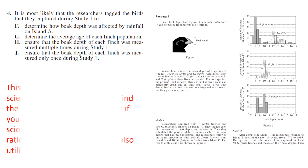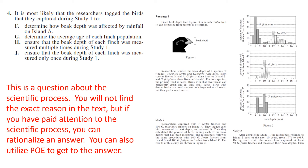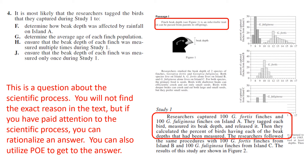Question four: it is most likely the researchers tagged the birds captured during Study One to do what? This is a scientific process question — you may not find the exact reason in the text, but you have to reason through it. Choice F (rainfall) is out — they're not studying how beak depth is affected by rainfall, and it's an inheritable trait. G (age) is out entirely. That leaves H or J — since beak depth is an inheritable trait and isn't changing, they'd only need to measure each bird once. So the answer is J.